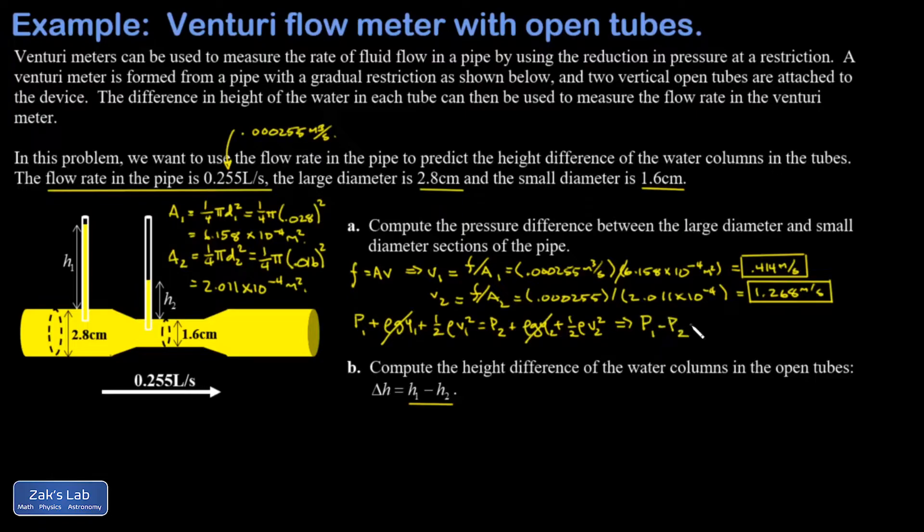I'm going to take this second kinetic term and move it to the right hand side and factor out the one half ρ, so I get ½ρ(v2² - v1²). Now I can plug in the density of water, which is 1000 kg/m³, and the difference in the squares of my two speeds. To three sig figs I get a pressure difference of 718 pascals, meaning the pressure is 718 pascals higher in the fat section than in the skinny section.